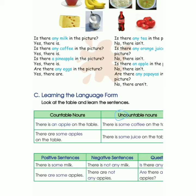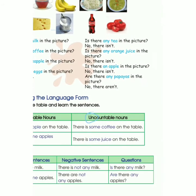Untuk yang uncountable-nya — yang tidak bisa dihitung: There is some coffee on the table. Coffee is uncountable noun because we cannot count coffee. Kamu tidak bisa menghitung kopi satu per satu.